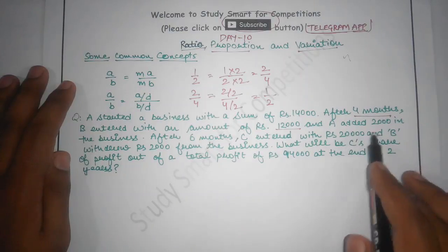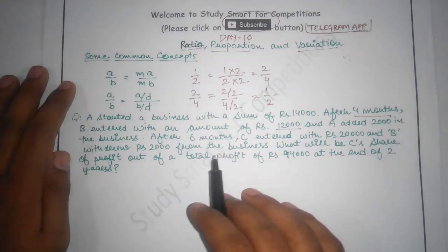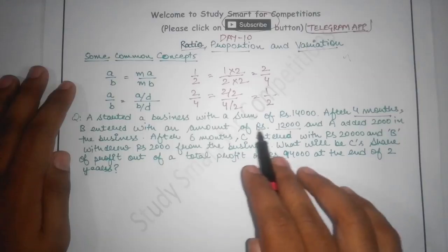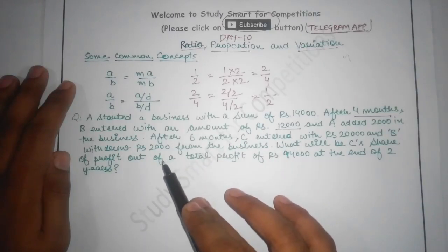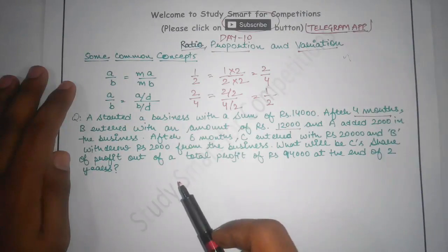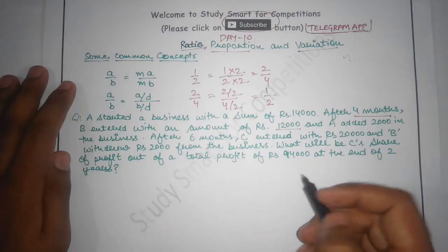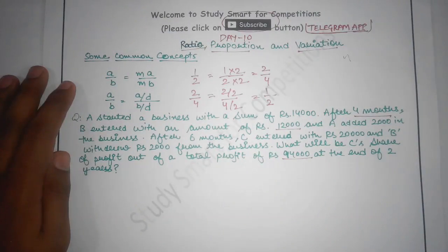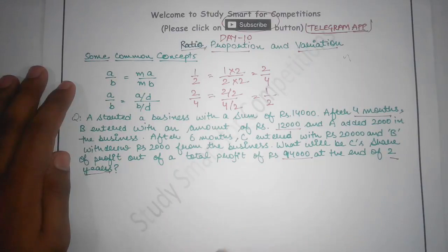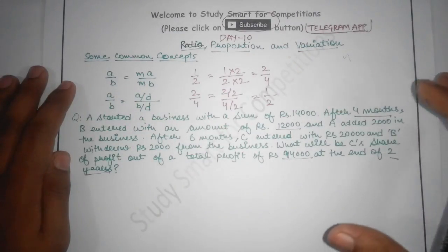B entered the business after 4 months and after 6 months from start he withdrew Rs. 2,000. The question asks: what will be C's share of profit out of the total profit of Rs. 94,000 at the end of 2 years? To find C's share, we need to find the proportion of C's investment in the business.